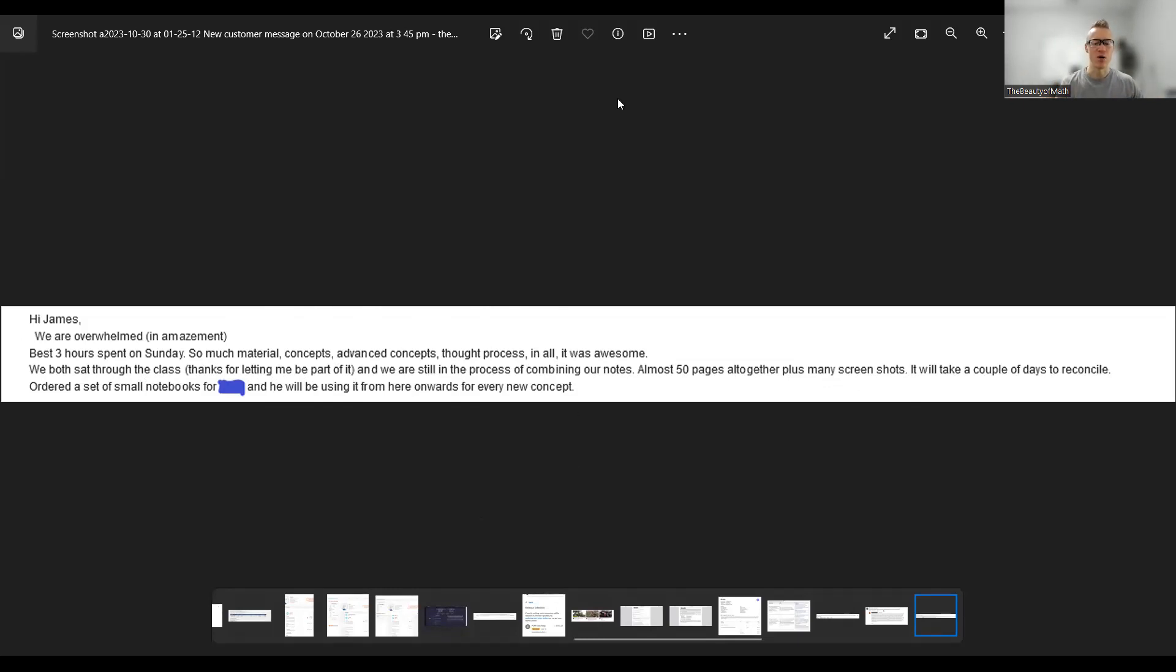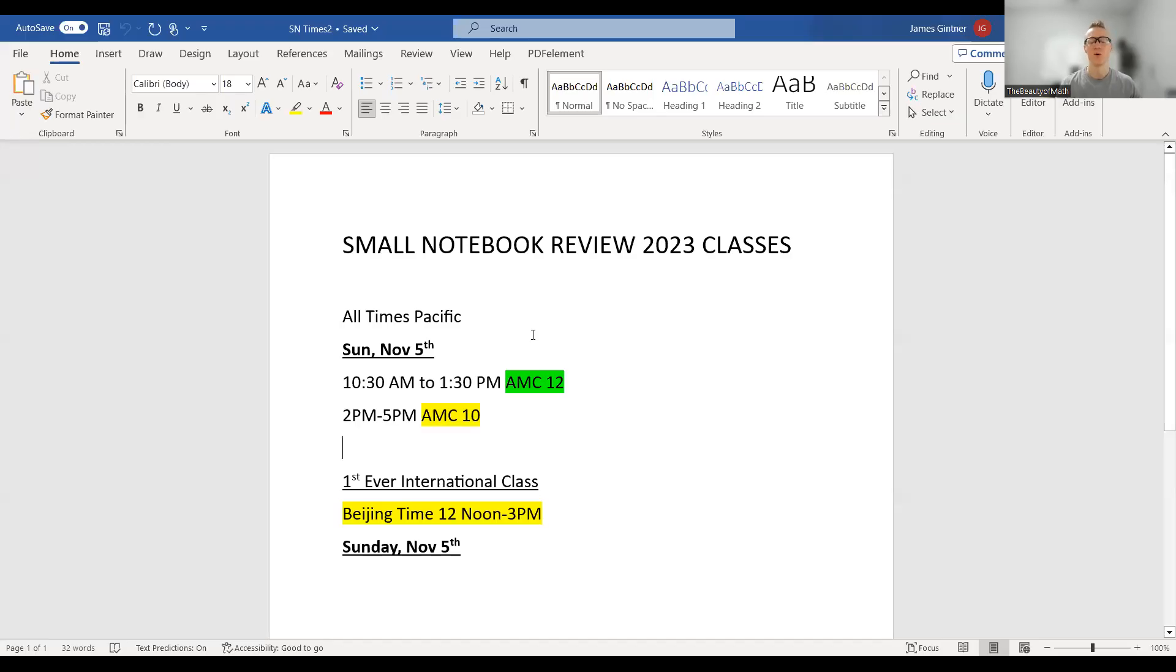In the spirit of that, I will share one more time the class times available for this coming Sunday. If you are domestic on the western hemisphere, it is going to be Pacific times 10:30 AM to 1:30 PM for AMC 12 and the other class is going to be 2 PM to 5 PM for AMC 10. Essentially this represents 12 years, 10 to 12 years of research of me and all the things that I found really interesting and noteworthy.